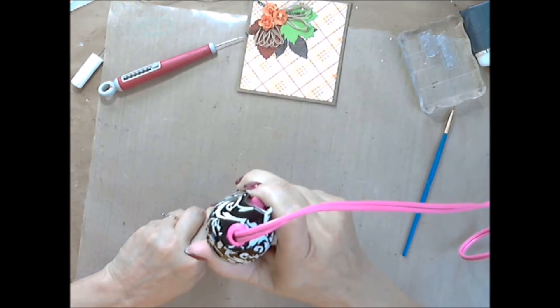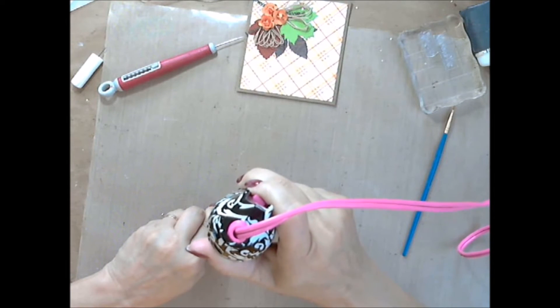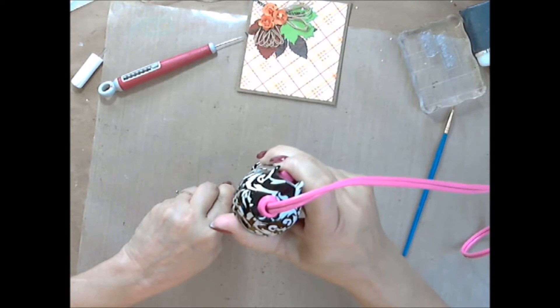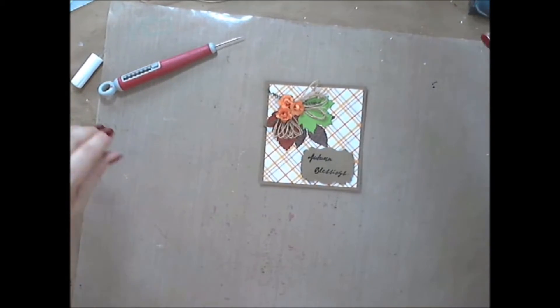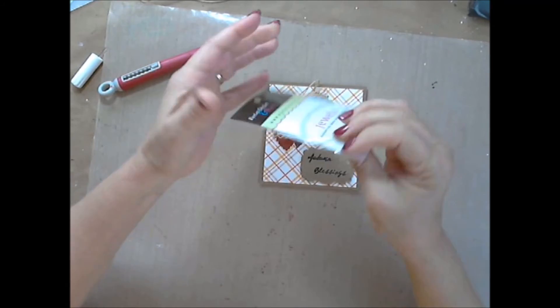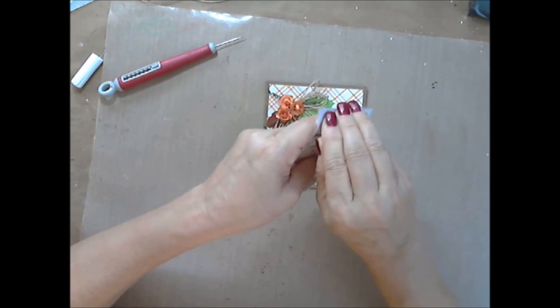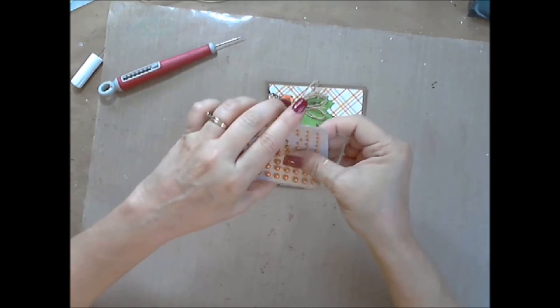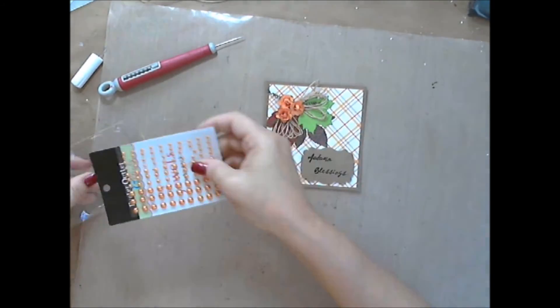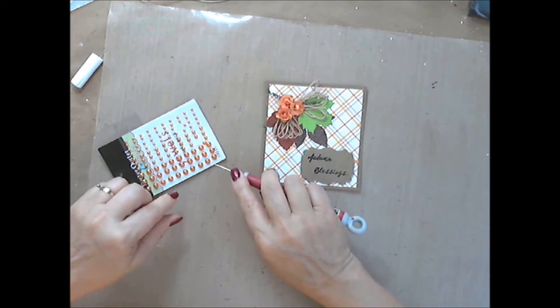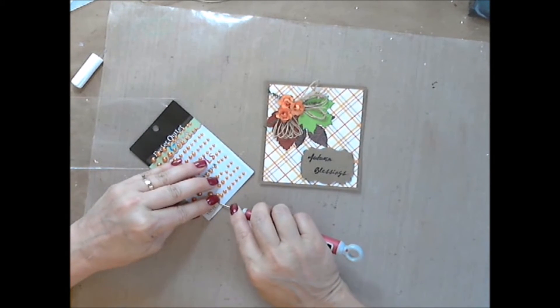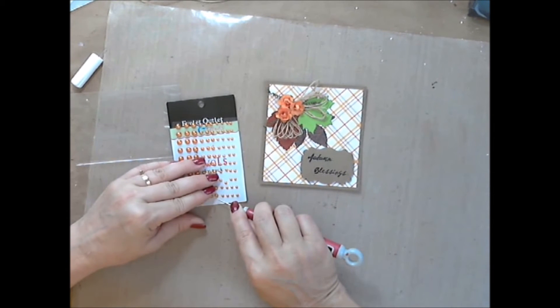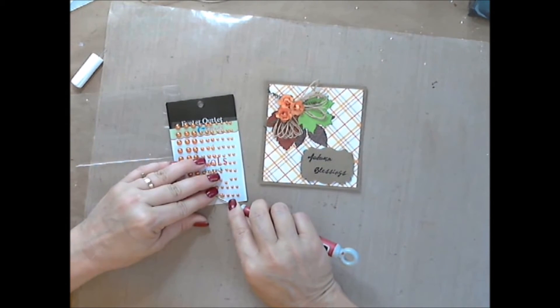I'm going to heat emboss this powder real quick so it will be set, then I can put my sentiment on the card. I received some jewels from the eyelet outlet that came from the boutique in our kit in orange, and I'm going to use those by putting them around the sentiment to decorate it up a little bit.